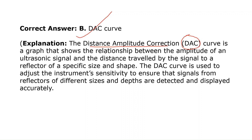The DAC curve is a graph that shows the relationship between the amplitude of an ultrasonic signal and the distance traveled by the signal to a reflector of a specific shape and size. It is used to adjust the instrument sensitivity to ensure that signals from reflectors of different sizes and depths are detected and displayed accurately.